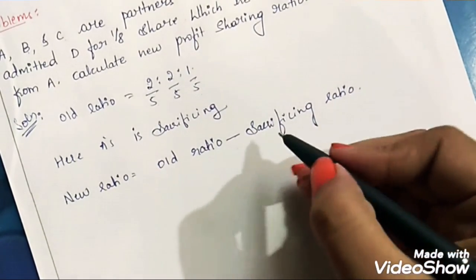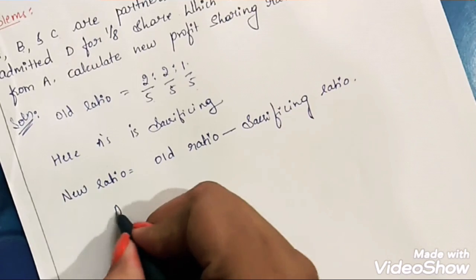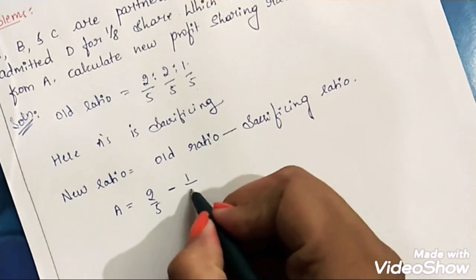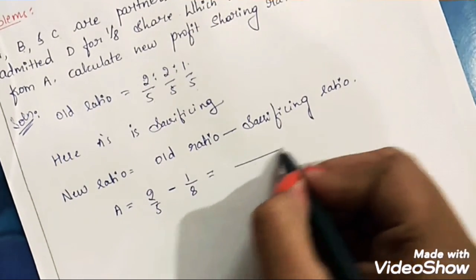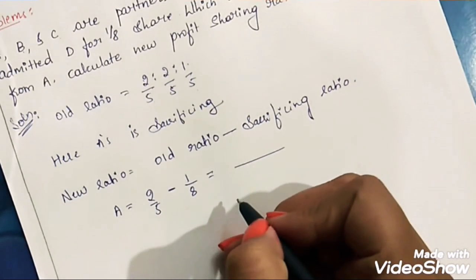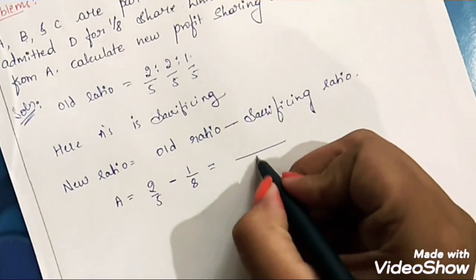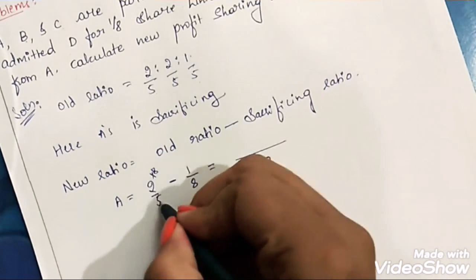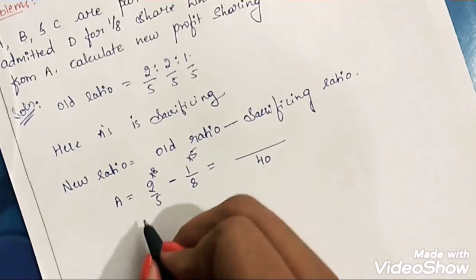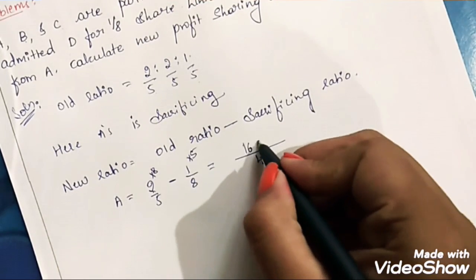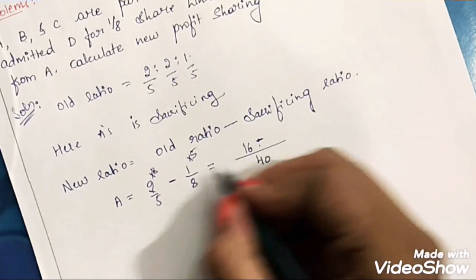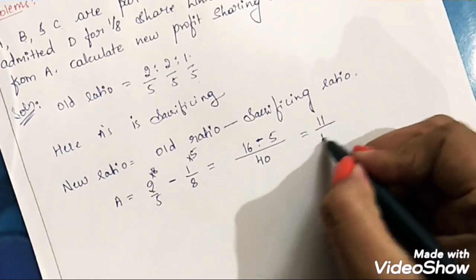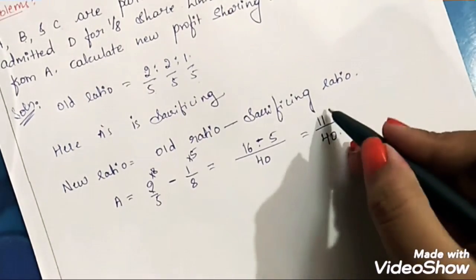We need to find the new ratio only for A. A's old ratio was 2/5, and when we deduct D's 1/8th share, the denominator is not the same, so we find the LCM. LCM of 5 and 8 is 40. So 5×8 = 40 and 8×5 = 40. Then 2×8 = 16 minus 1×5 = 5, giving us 11/40. So A's new ratio is 11/40.